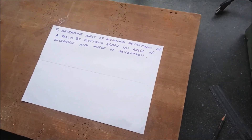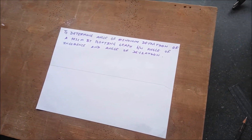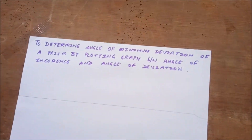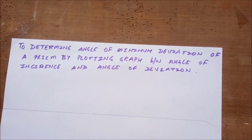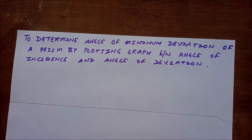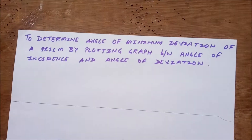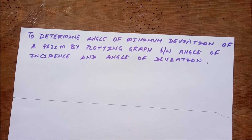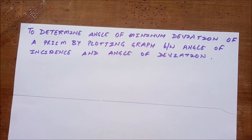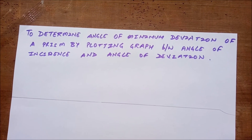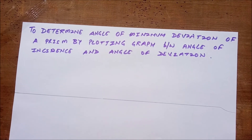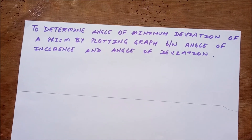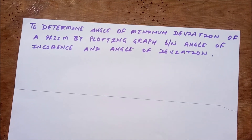Today students will do the experiment for prism. Our aim is to determine the angle of minimum deviation of a prism by plotting a graph between angle of incidence and angle of deviation.